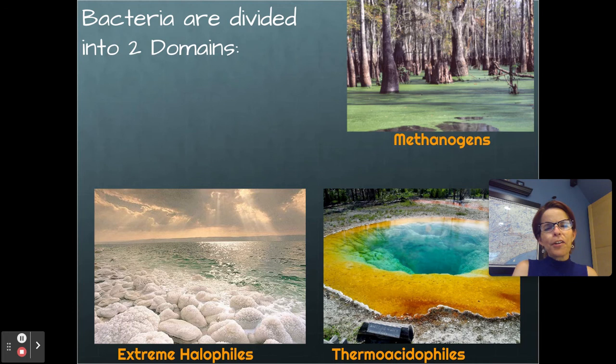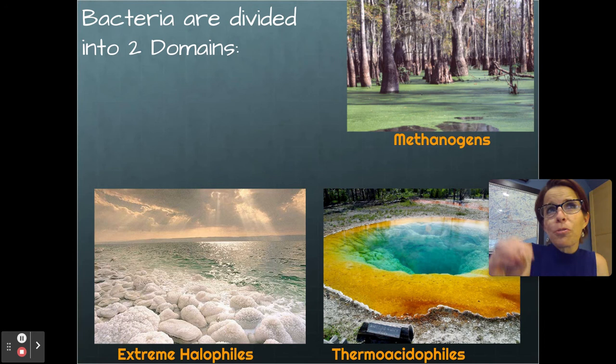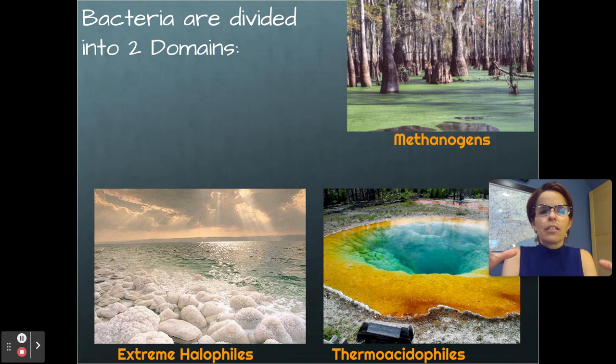There are so many more bacteria on this planet than there are anything else that's living. In my body — and so do you — I have a hundred trillion cells. I actually have more bacterial cells in my intestines than I have human cells in my body, so there are more than a hundred trillion bacterial cells in my intestines alone. Scientists have divided bacteria into two domains — you might want to think of them as like kingdoms, they're classifications, and they're very, very different from one another.